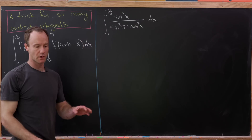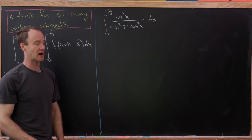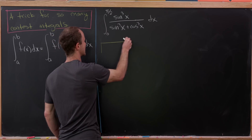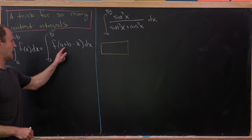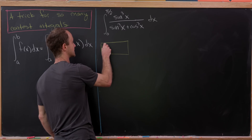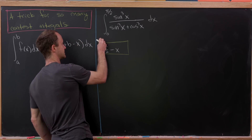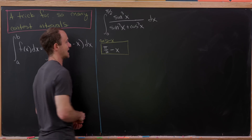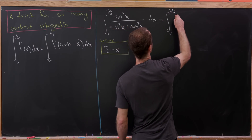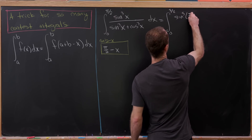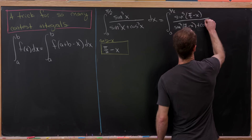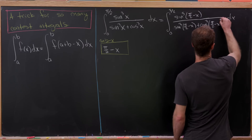Our first application is to evaluate the integral from 0 to π/2 of sin³(x) over (sin³(x) + cos³(x)). The a + b − x term is π/2 + 0 − x = π/2 − x. So we can rewrite this as the integral from 0 to π/2 of sin³(π/2 − x) over (sin³(π/2 − x) + cos³(π/2 − x)) dx.